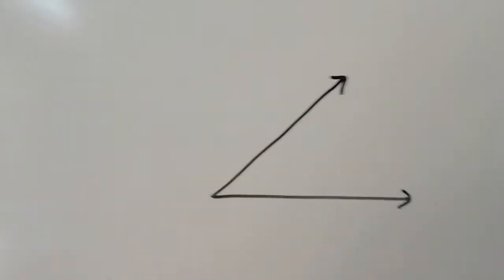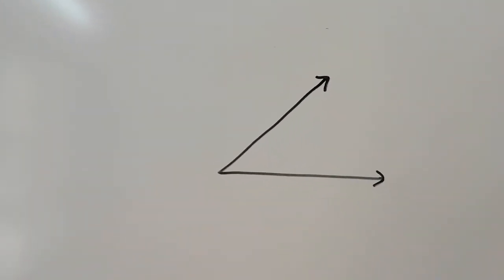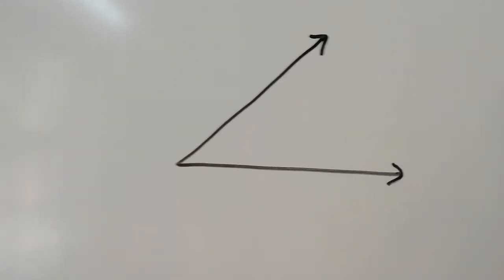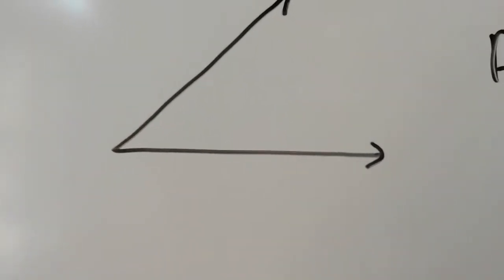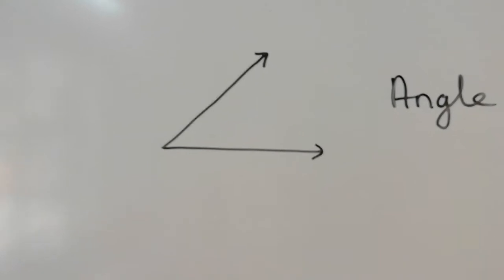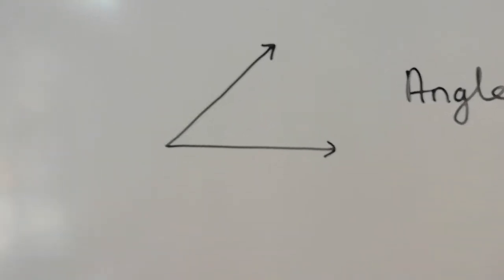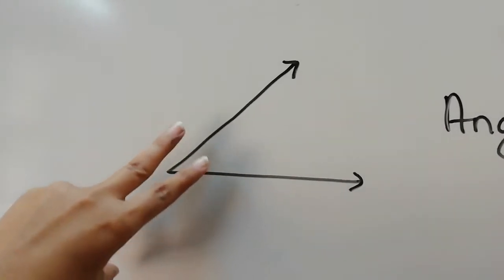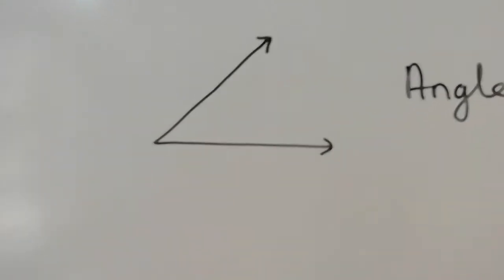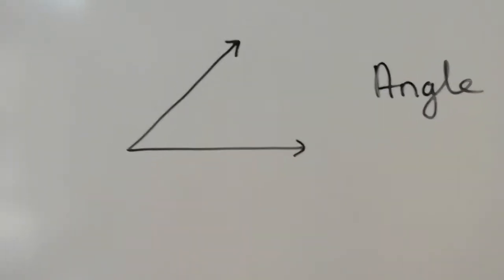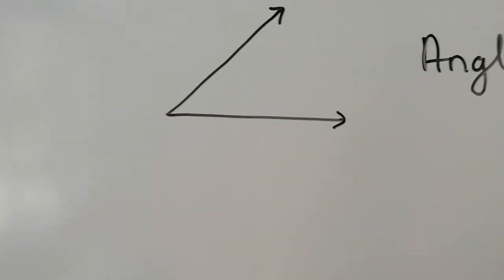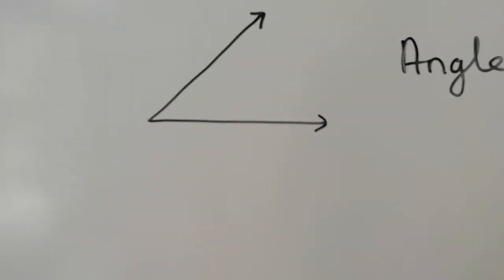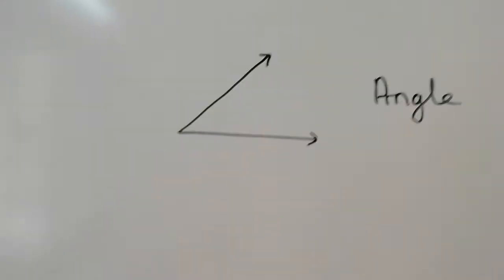So we know point, segment, ray, and line. Now one interesting shape is this — what is this shape called? This shape is called an angle. An angle is drawn with the help of two rays.